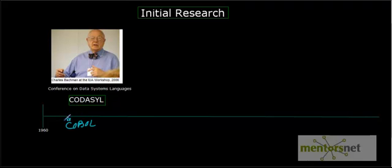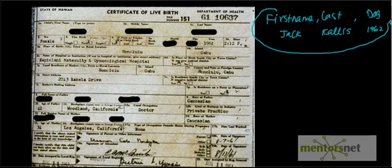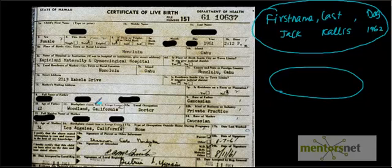While working for CODASYL, Charles Bachman wanted to find out a way to store those things. Using a birth certificate as an example, he took out fields like first name — say 'Jack' — last name — say 'Calis' — and date of birth — say 1962. He put these atomic elements into what he called a record. Another record might be another birth certificate: first name 'Sue', last name 'Vickers', birth date 1965.